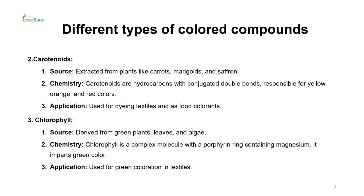The second category is carotenoid. As the name suggests, they are extracted from carrots, marigold and saffron. Carotenoids are hydrocarbons with conjugated double bonds responsible for yellow, orange and red colors. Their application is found in textile dyeing as well as food colorants. Saffron added to kheer or rasmalai brings a light yellow color — this same saffron can be used as a food colorant as well as for textile dyeing, though it would be too expensive. There are other yellow sources of dyes available instead.